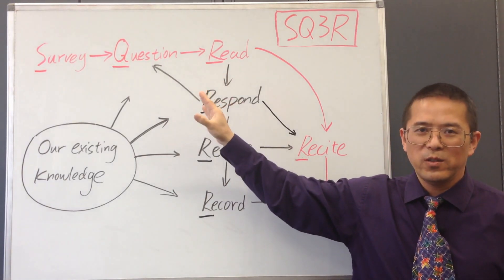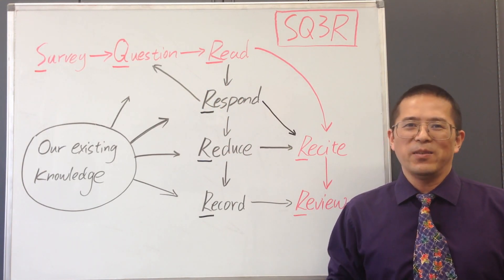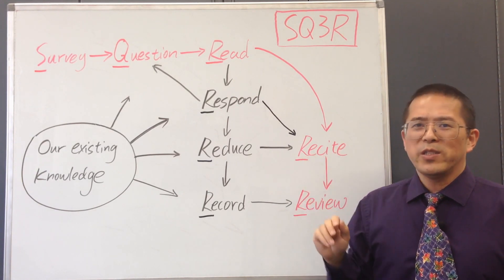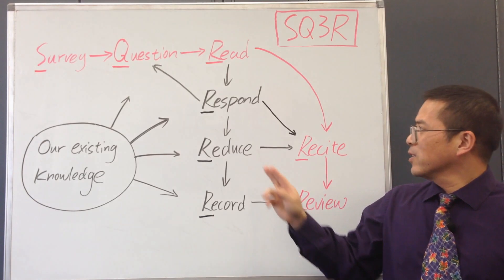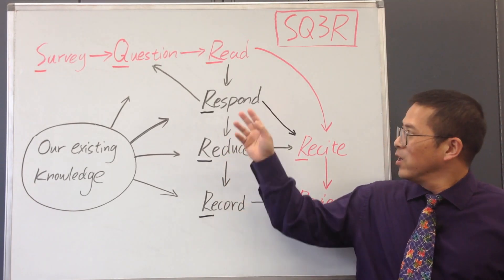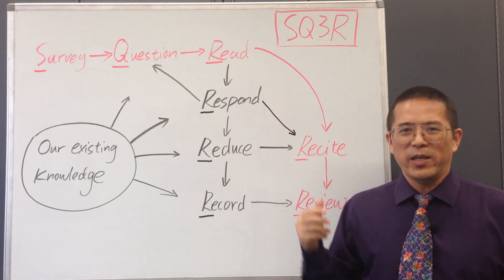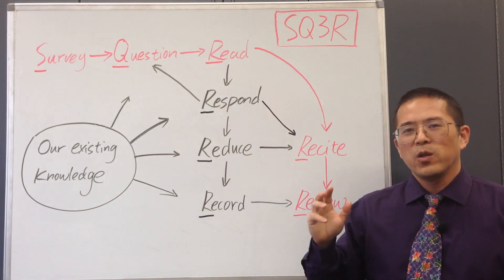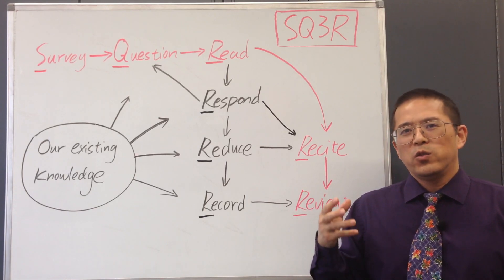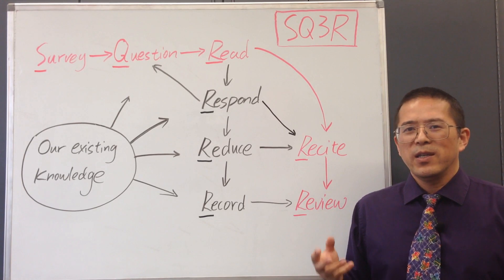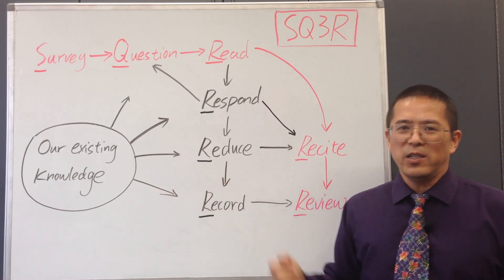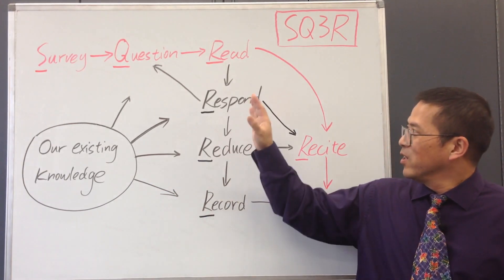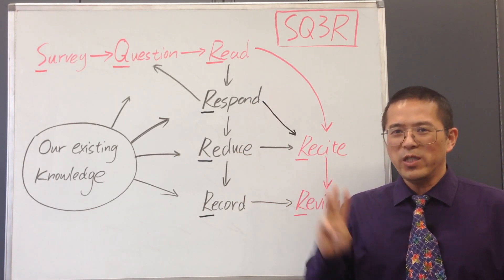After Survey and Question, we may begin to read the information one section at a time. The reading is just one R in the SQ3R method, but the reading process actually involves more R's, such as Respond, Reduce, and Record. Respond means we should always keep our questions in mind and actively look for answers to respond to these questions. Reduce means we should try our best to reduce the new information to some brief keywords or key concepts that make more sense to us based on our existing knowledge. Record means taking notes on the key ideas obtained from reading. Respond, Reduce, and Record are the three R's we need when we conduct deep reading.